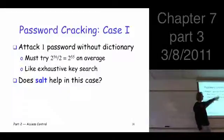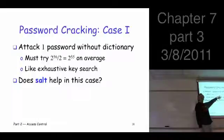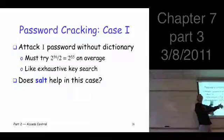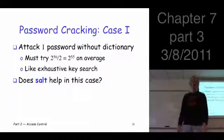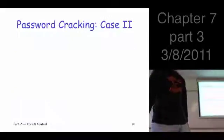It's essentially an exhaustive key search. Now how about a salt? Does it matter whether it's salted or not in this case? This is probably too much. Nobody's going to compute this many hashes and store them online. So you really have to do the work in real time and compute the hashes. So it doesn't matter whether there's a salt there or not.